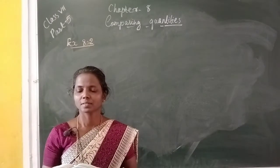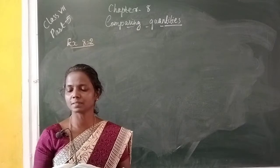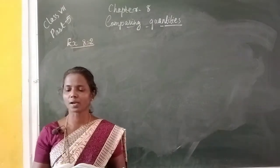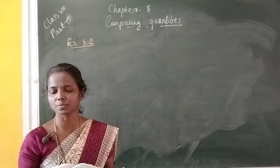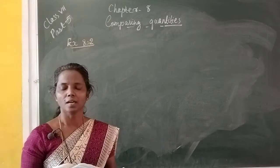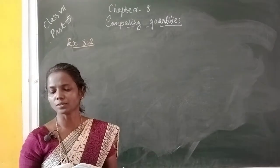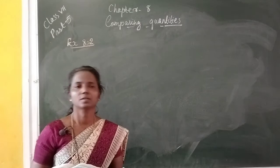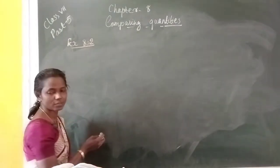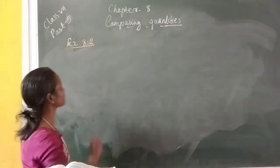Question number 6: Convert given percentages to decimal fractions and also to fractions in simplest form. Here percentage is given, and we need to convert this percentage into decimal fractions and also write its simplest form. First we write the first question: 25 percentage.